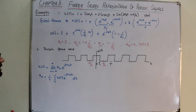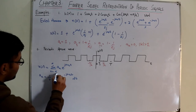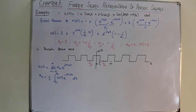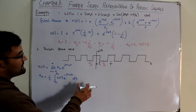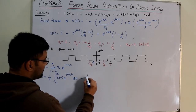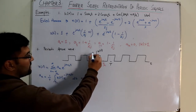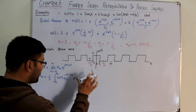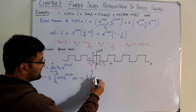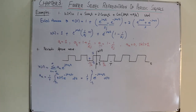So aₖ = (1/T) ∫₋T/2^(T/2) x(t) e^(-jkω₀t) dt. Within this period, the signal equals 1 from -T₁ to +T₁ and 0 elsewhere. So aₖ = (1/T) ∫₋T₁^(T₁) e^(-jkω₀t) dt.